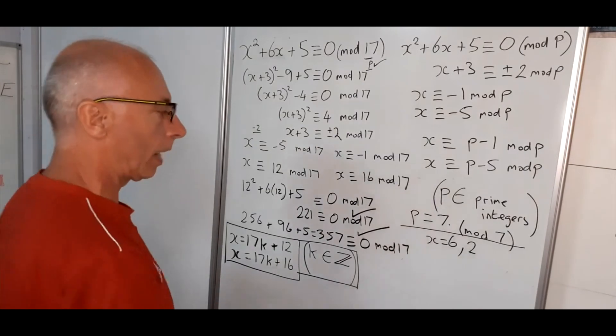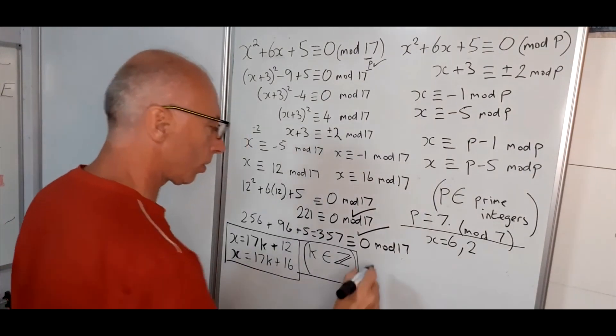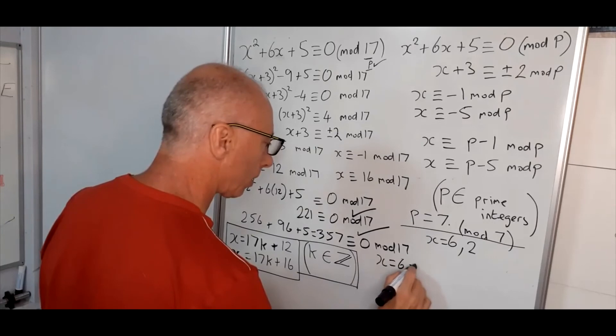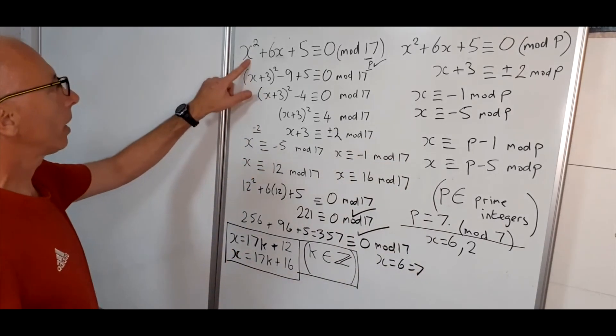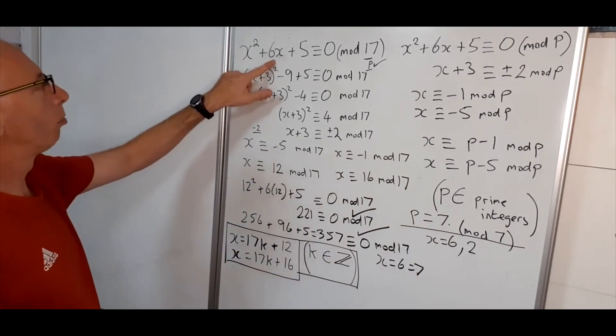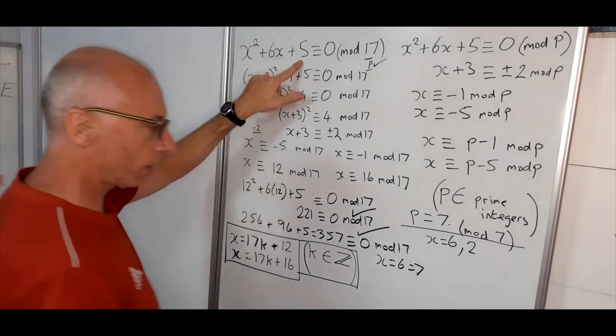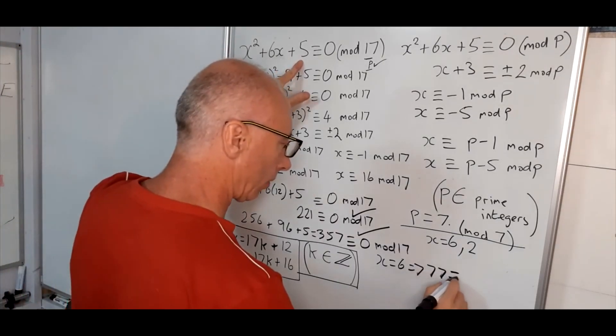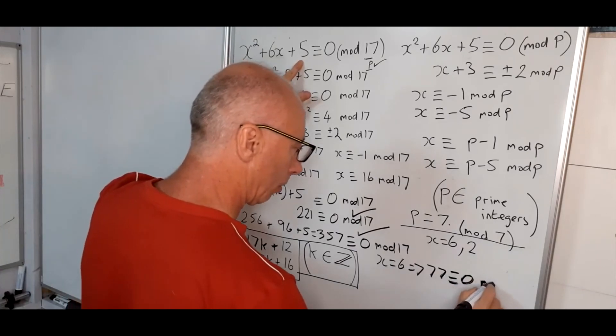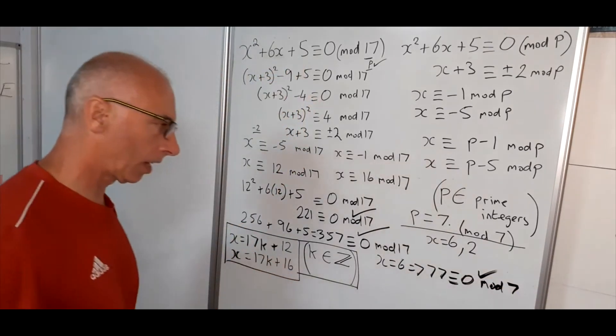Okay. So now we're going to plug in x equals 6, just to test our theory. So x equals 6. 6 squared is 36. Plus 6, 6 is another 36. That's 72. Plus 5 is 77. So 77 is congruent with 0 mod 7. Tick. That's fine.